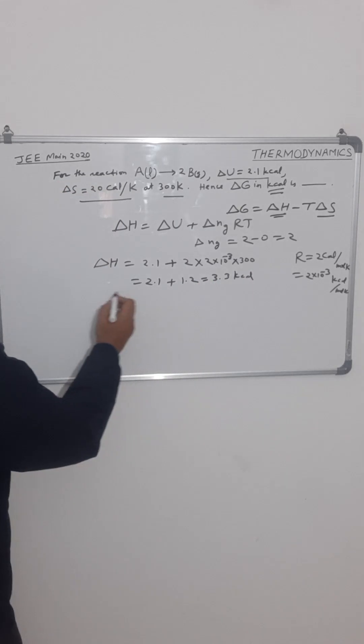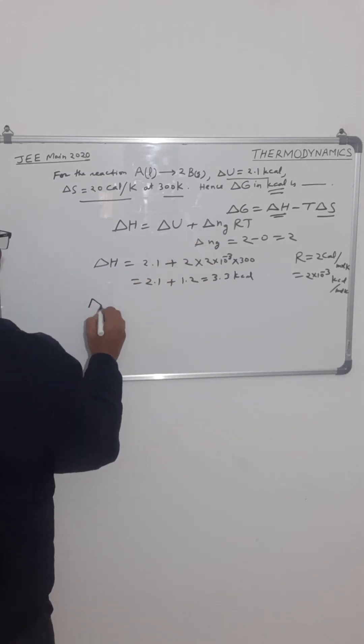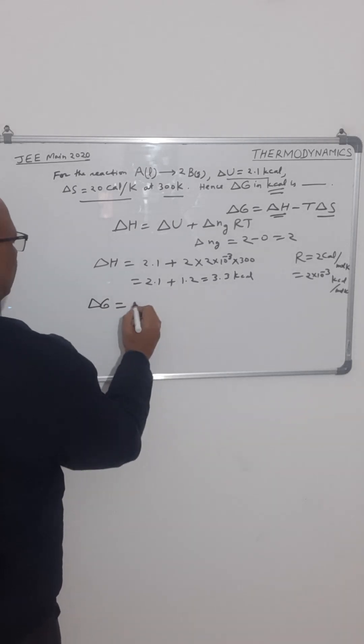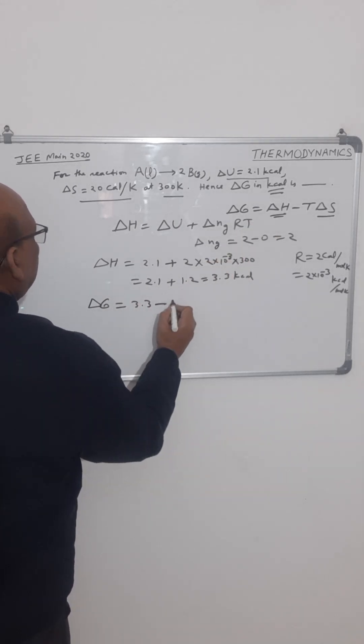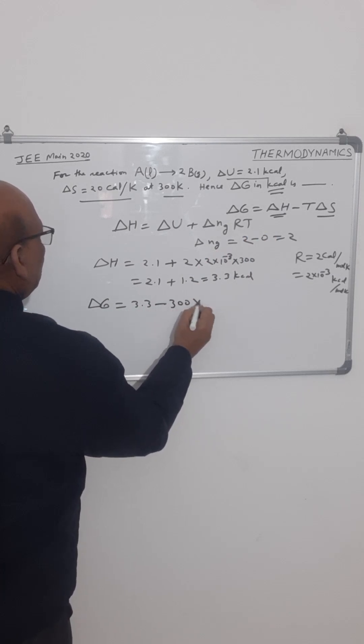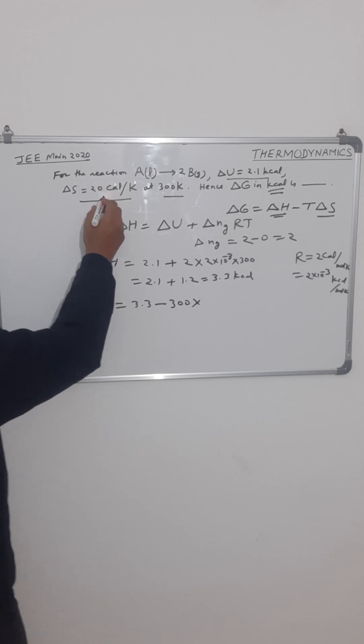Now we have to find the value of delta G. So delta G is equal to delta H, that is 3.3, minus T delta S. T is 300, into delta S is given to us as 20.